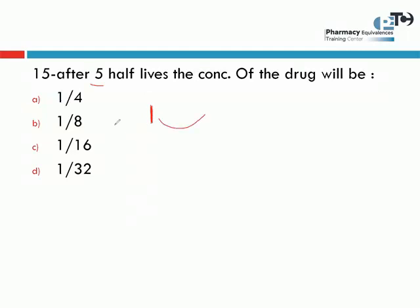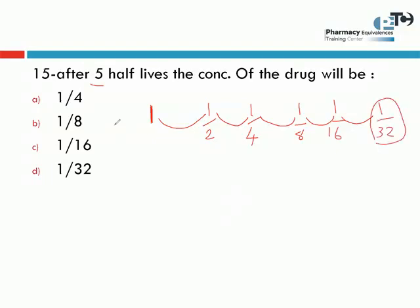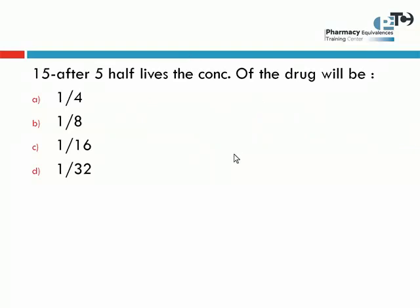After one half-life it will be 1/2, then the half will become 1/4, then 1/8, then 1/16, and finally after five half-lives it will be 1/32, which is the correct choice. I think this is the easiest way to deal with these questions, and this question is repeated in many exams. So the choice here will be 1/32.